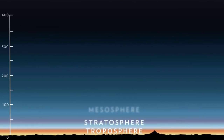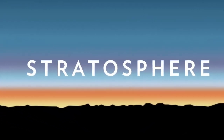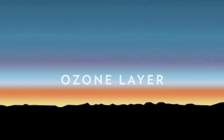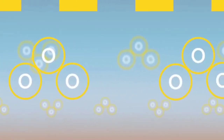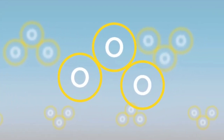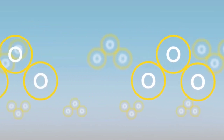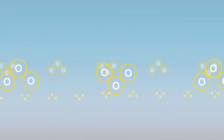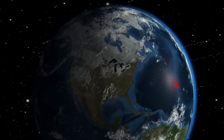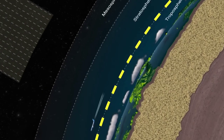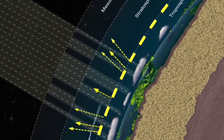Earth's atmosphere is made up of six layers. The second layer, called the stratosphere, contains the ozone layer. The ozone layer is made up of a highly reactive molecule called ozone, which contains three oxygen atoms. It is a trace gas in the atmosphere. The ozone layer acts as Earth's sunscreen, absorbing about 98% of damaging UV rays.